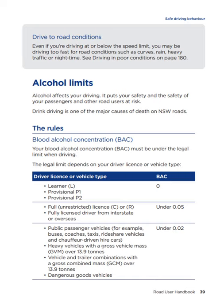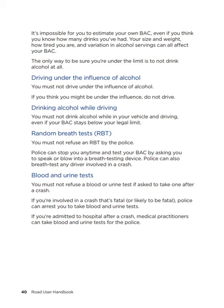For public passenger vehicles — for example buses, coaches, taxis, rideshare vehicles and chauffeur-driven hire cars — and heavy vehicles with a gross vehicle mass over 13.9 tonne, and vehicle and trailer combinations, the blood alcohol concentration limit is also 0.05 or zero depending on licence type. It is impossible to estimate your own blood alcohol concentration, even if you think you know how many drinks you've had. Your size and weight, how tired you are, and variation in alcohol servings can all affect your blood alcohol concentration. The only way to be sure you're under the limit is to not drink alcohol at all. You must not drive under the influence of alcohol — if you think you might be under the influence, do not drive. You must not drink alcohol while in your vehicle and driving, even if your blood alcohol concentration stays below your legal limit.